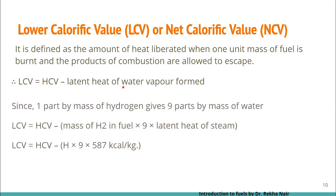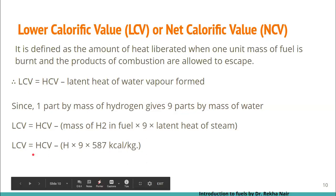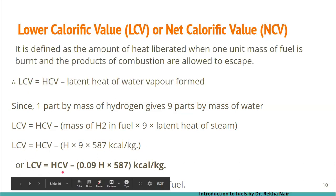Since one part by mass of hydrogen gives nine parts by mass of water, the latent heat of water vapor formed is: mass of hydrogen in the fuel multiplied by 9, multiplied by the latent heat of steam. So LCV = HCV − (H × 9 × 587), or LCV = HCV − (0.09H × 587), where H is the percentage of hydrogen.